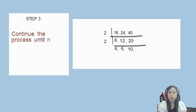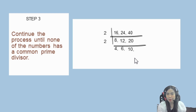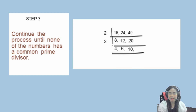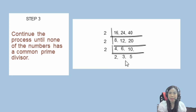Step 3: continue the process until none of the numbers has a common prime divisor. So, continue lang natin. We have 4, 6, and 10 — isip ulit tayo ng prime number na pwede i-divide dito sa tatlong ito. 4, 6, and 10 divisible sila by 2. So, 4 divided by 2 is equals to 2, 6 divided by 2 is equals to 3, 10 divided by 2 is equals to 5. Kung mapapansin ninyo, sa quotient natin sa baba, we have 2, 3, and 5 — lahat yan ay prime number na, so wala na tayong pwedeng i-divide sa kanila.